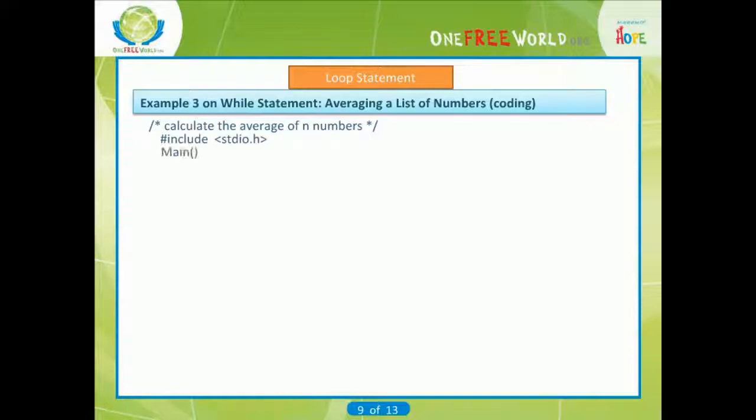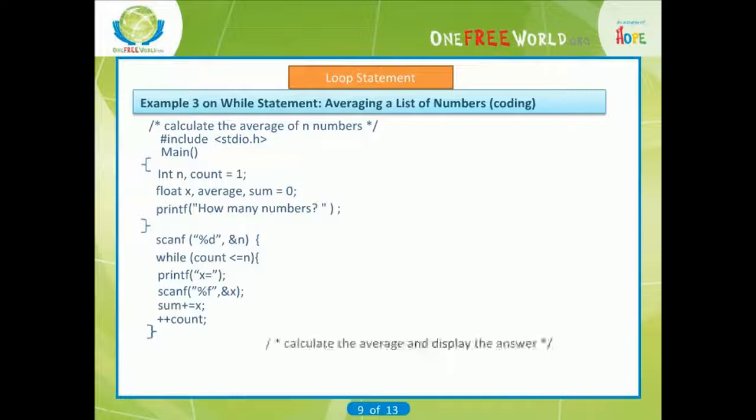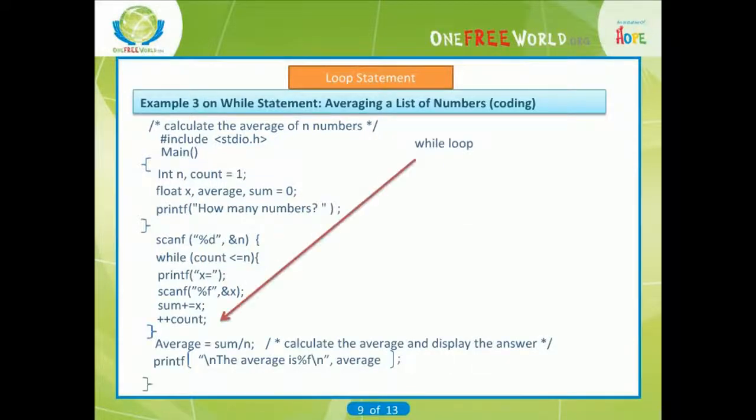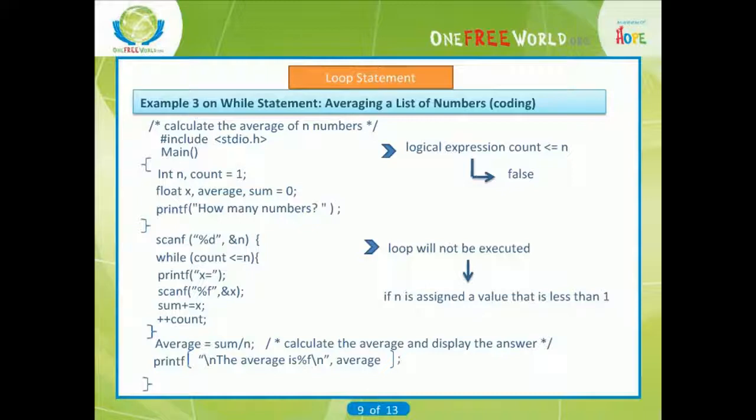Notice that the while loop contains a compound statement which, among other things, causes the value of count to increase. Eventually, this will cause the logical expression count less than or equal to n to become false, thus terminating the loop.